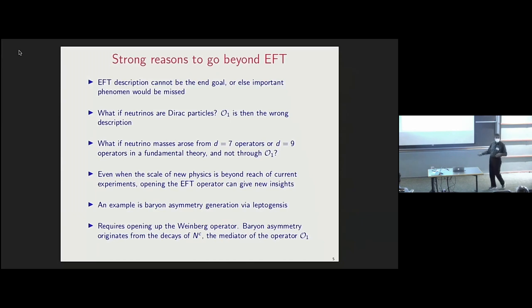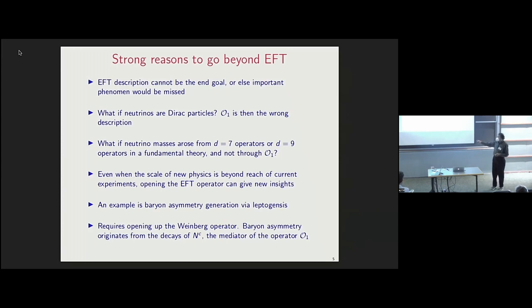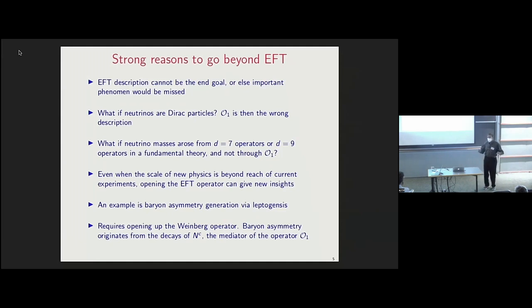Even when the scale of new physics generating neutrino mass is beyond direct reach, opening up the EFT operator can give new insights. An important example is leptogenesis, which occurs in the type-I seesaw mechanism. If we had simply fit the neutrino data to the Weinberg operator without opening it up, we would miss the phenomenon of leptogenesis entirely.